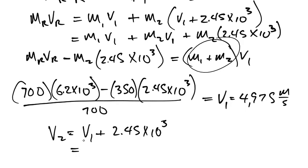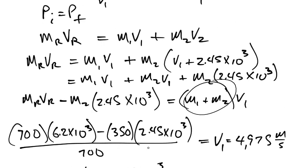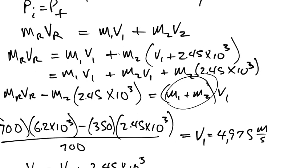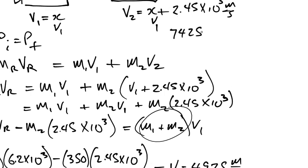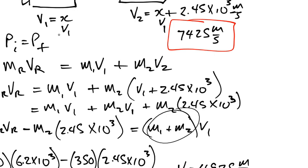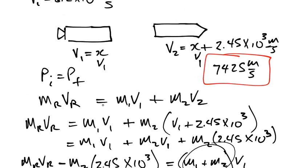And we're getting an answer of 7,425 meters per second for V2. So this guy is going 7,425. Let's put a red box around that for that one. And this one is going 4975.